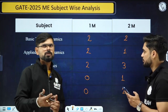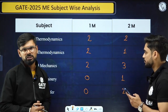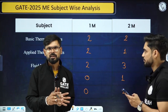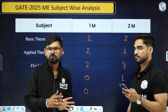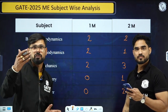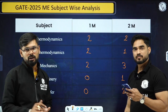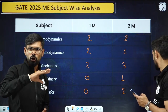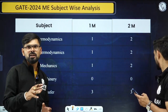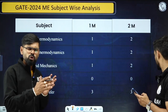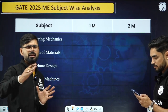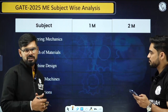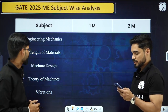When you start your preparation, there are three major categories in technical: thermal fluid, the design portion, and manufacturing. In all three, the overall weightage is similar every year, but the subject-wise weightage keeps changing.